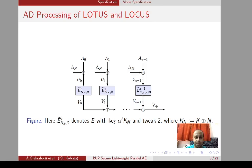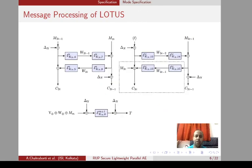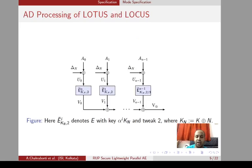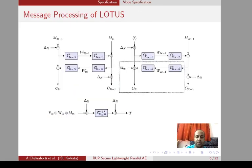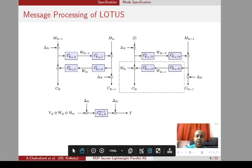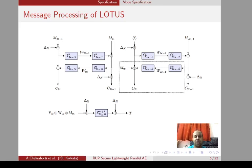In the message processing phase of LOTUS, the structure is almost similar to OTR except we extract some hidden internal states to compute a checksum W_XOR. The output of the associated data processing phase is V_XOR, which is the checksum of the outputs of the tweakable block ciphers. For the last message block, we combine it with both V_XOR and W_XOR and process it using a mask-encrypt-and-mask fashion to output the final tag.